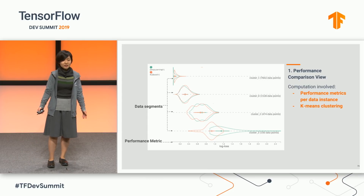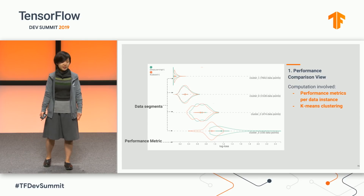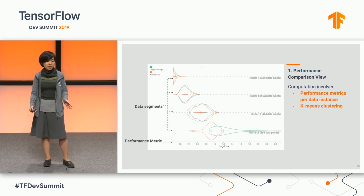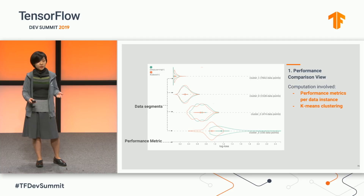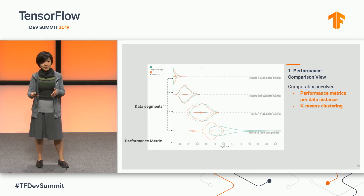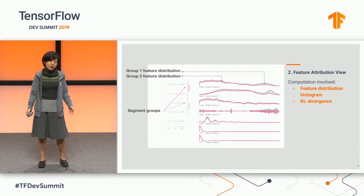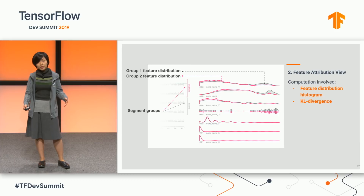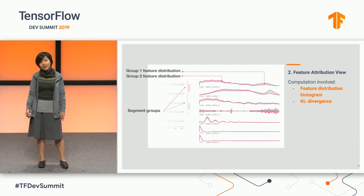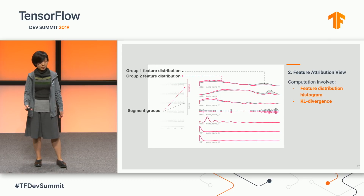So what are the intensive computations involved in the Manifold interface? In the performance comparison view, we compute the performance scores for each data point on each model, and use those metrics to run k-means clustering to segment the data set into subsets. In the feature attribution view, for each feature, we compute the distribution histograms of two different subsets, and use those histograms to compute KL divergence to rank feature importance for model developers to inspect model performance.